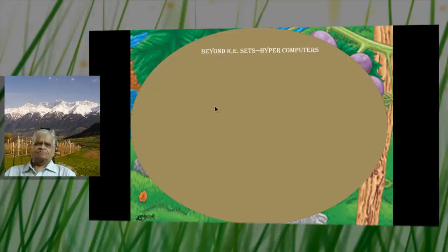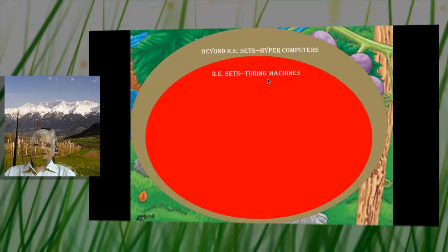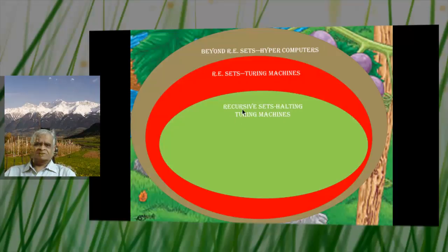Here is a circle. Beyond recursive sets are hyper-computers — beyond Turing machines — which can solve the halting problem. Inside are the RE sets, accepted by Turing machines. Turing machines suffer from the halting problem. Recursive sets are decided by halting Turing machines.